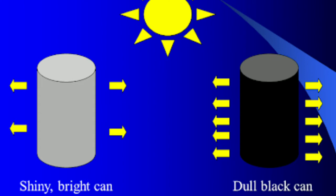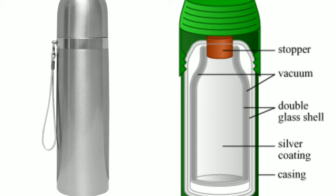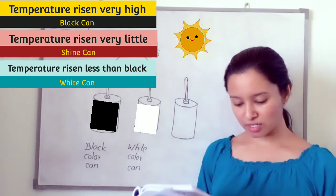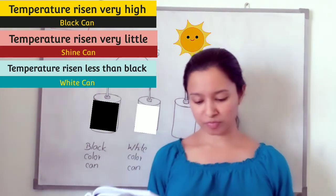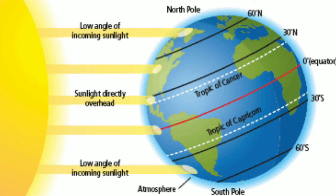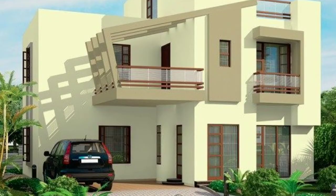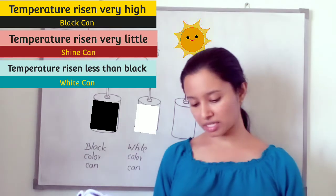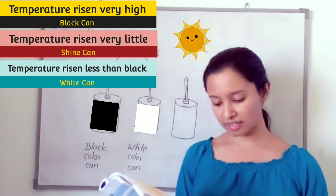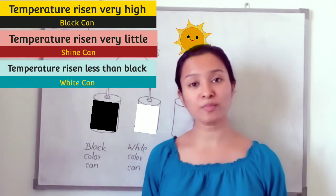Black surfaces lose heat very fast while polished shiny surfaces do so very slowly. Therefore, hot water in containers with polished shiny surfaces can be kept hot for a long time. In Sri Lanka, the country gets more sunlight throughout the year, so it is more suitable to use light colors to paint the outer walls of buildings rather than dark colors. This is because light colors absorb radiated heat less, which prevents the interior of the house from heating up.